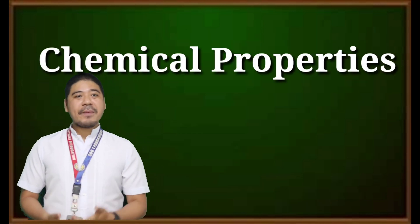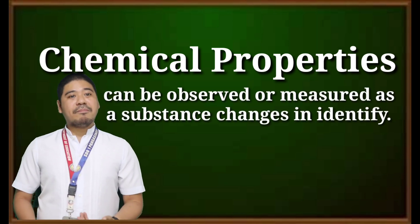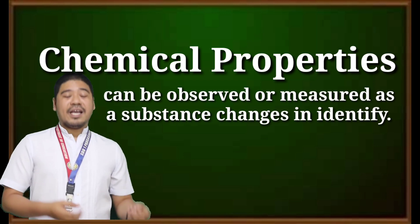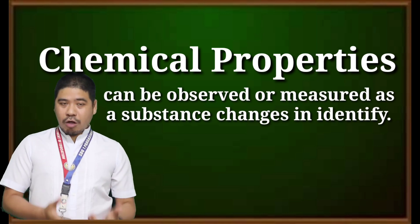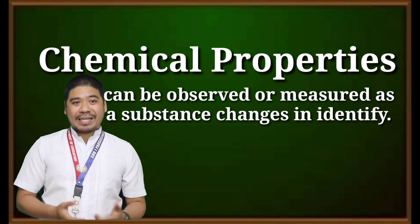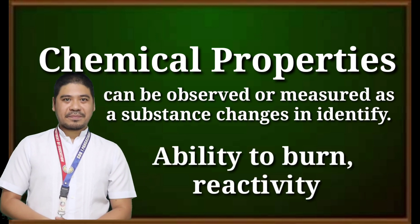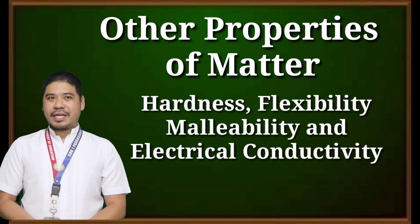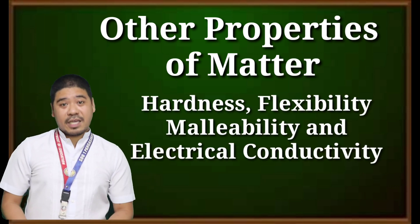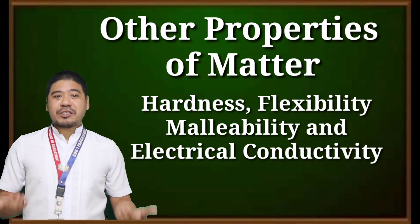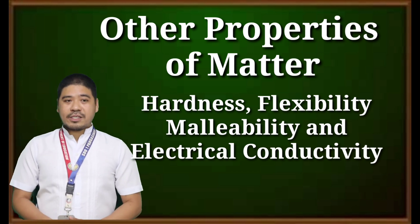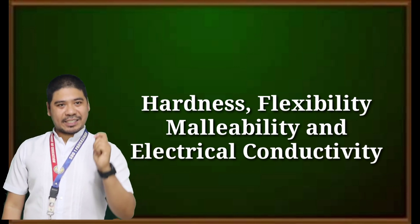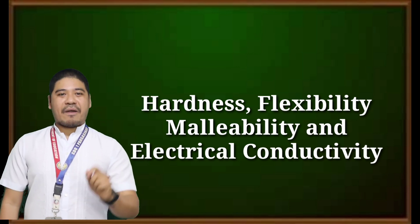Moving on to the chemical property of matter. Chemical properties can be observed or measured as a substance changes in identity — there is a change in identity when we talk about chemical properties. Examples are ability to burn and reactivity. Other properties of matter include hardness, flexibility, malleability, and electrical conductivity, which vary from one sample to another.